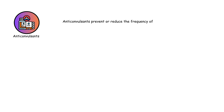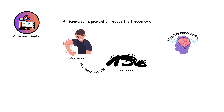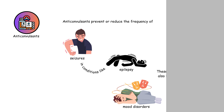Anticonvulsants prevent or reduce the frequency of seizures in conditions like epilepsy. They stabilize nerve activity in the brain. These medications can also be used to treat mood disorders and chronic pain.